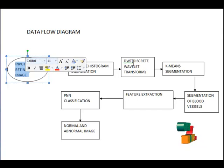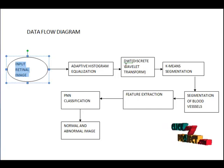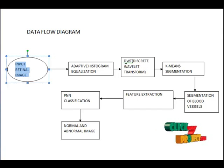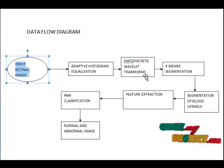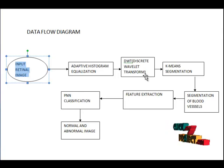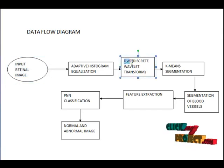Adaptive histogram equalization is a computer image processing technique used to improve contrast in images. It differs from ordinary histogram equalization in that the adaptive method computes several histograms, each corresponding to a distinct section of the image, and uses them to redistribute the lightness values of the image. Adaptive histogram equalization requires the computation of a different neighborhood histogram and transformation function for each pixel in the image.